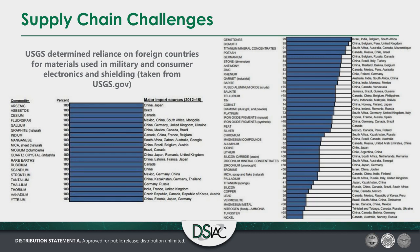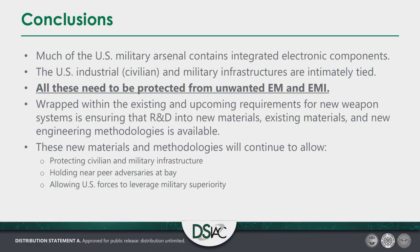In conclusion, much of the U.S. military arsenal now contains integrated electronic components. The industrial, civilian, and military infrastructures are intimately tied together, and all need to be protected from unwanted EM and EMI. Wrapped up within existing and upcoming requirements for new weapon systems, we need to ensure that R&D into new weapons, existing materials, and new engineering methodologies continue to be made available. These new materials and methodologies will continue to allow protecting civilian and military infrastructure, holding near-peer adversaries at bay, and allowing U.S. forces to leverage our own military superiority. Thank you very much for listening.